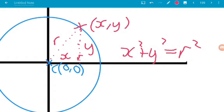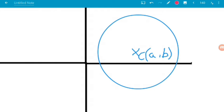Okay, so we're also going to see circles that are not centered at the origin, so they are centered somewhere else on the coordinate grid, we're going to call that somewhere else A, B.